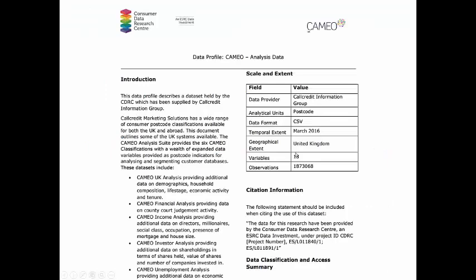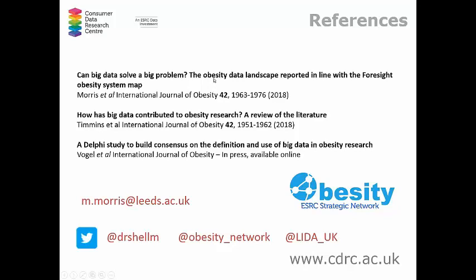Here's an example of a data profile for CAMEO geodemographic information. Geodemographic classification uses data from the census and commercial data to generate a profile for the whole of the UK — grouping everyone into ten different categories of like types of people, tied to a small area geography. These are really quite useful in profiling people for obesity as well. If you are interested in how different sorts of data can be used in the obesity system, a number of us have authored papers about how big data can be used in obesity research.